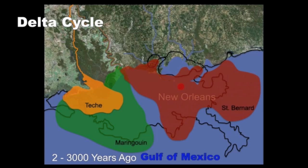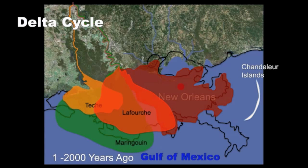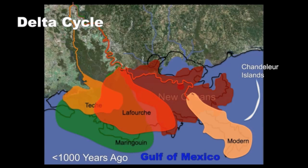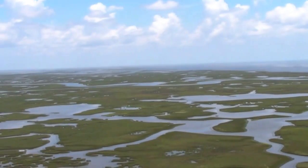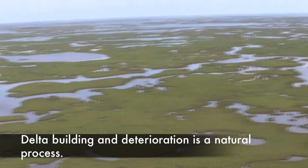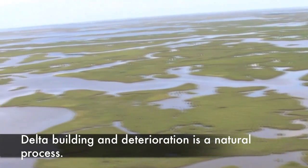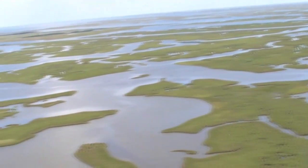Additional Delta Lobes were formed as the river switched from east to west and back again. When the river switched to a new course, the abandoned lobe began to deteriorate, a process that caused formation of barrier islands. The last area to form is what is now the modern Delta. This cycle of land building, followed by deterioration and rebuilding, is a natural part of the Delta cycle which has created a vast expanse of marshes, swamps, and barrier islands.